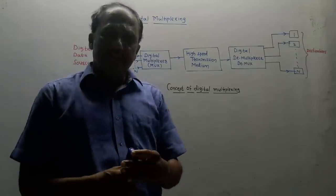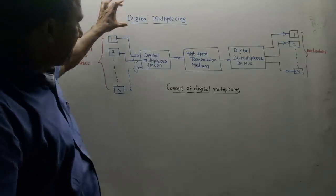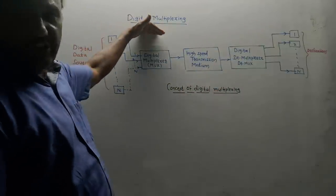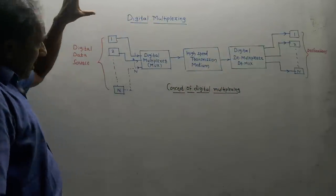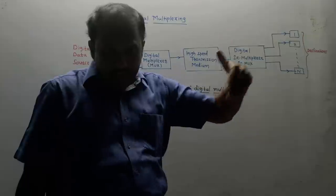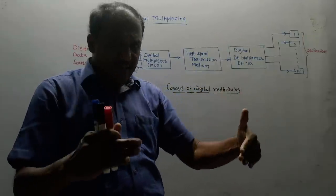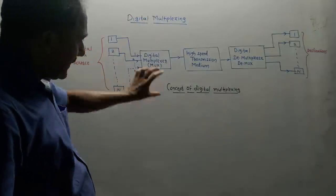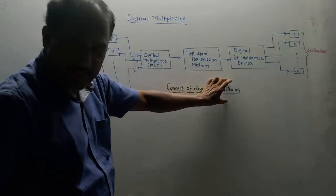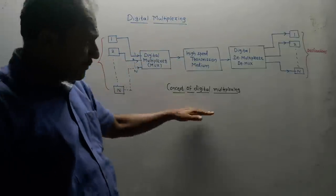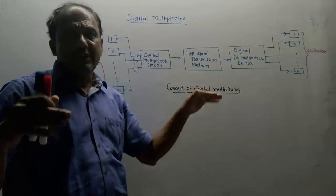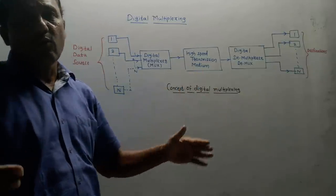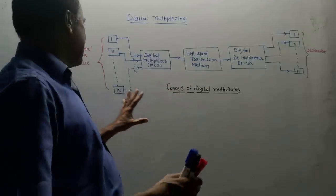Hello and welcome, dear students. This topic is Digital Multiplexing, from the subject Principles of Communication System. The name itself indicates that you can transmit many signals at a time. In this video, we will be discussing the concept of digital multiplexing, the different types of digital multiplexing, and the different hierarchies of digital multiplexing.